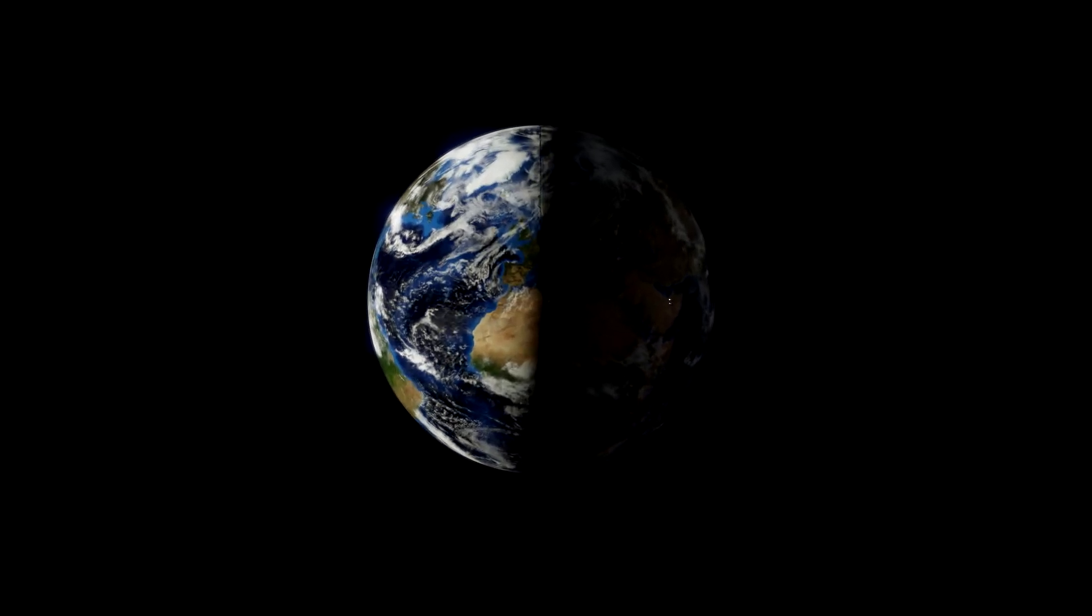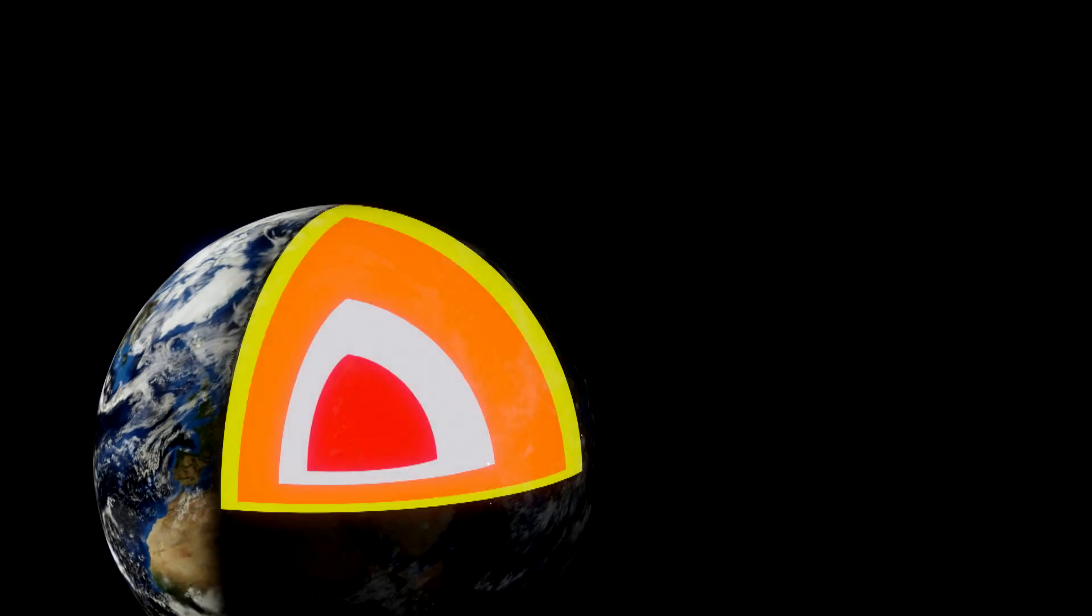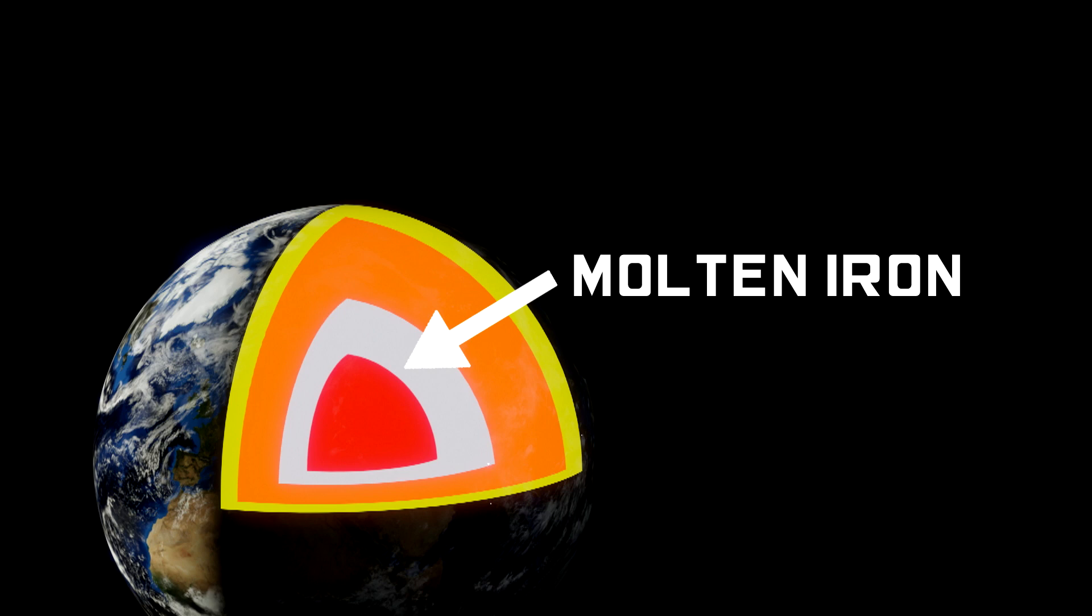The Earth is constantly being bombarded by solar wind, and without a key feature of the Earth, life would not be possible, as solar wind is not as friendly as it might sound. Fortunately, the Earth's core contains molten iron, that, when it roils around, generates a magnetic field that shields the Earth from any such streams of charged particles.